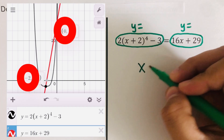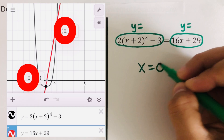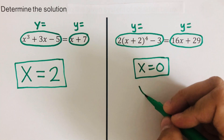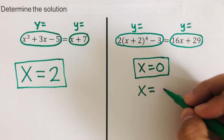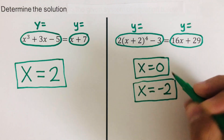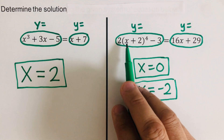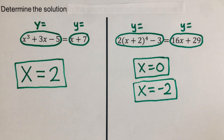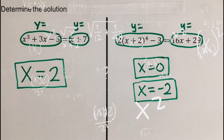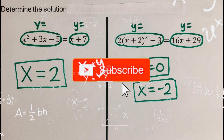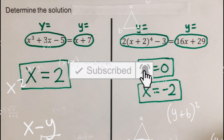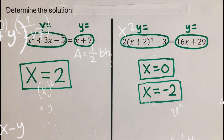We're taking the x values only since we're solving for x. The first solution is x equals 0, and the other solution is x equals negative 2. Did you get the same answers? If you find this video helpful, hit like and subscribe for more math videos. See ya!